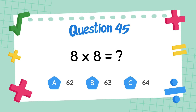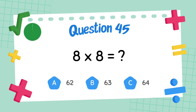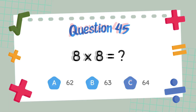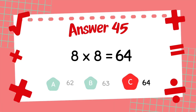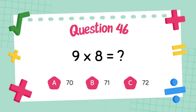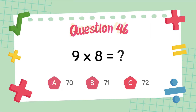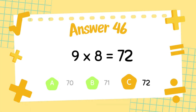What is 8 multiply 8? The answer is 64. What is 9 multiply 8? The answer is 72.